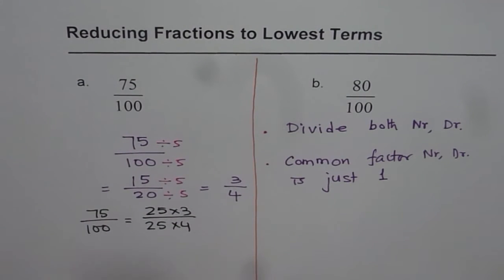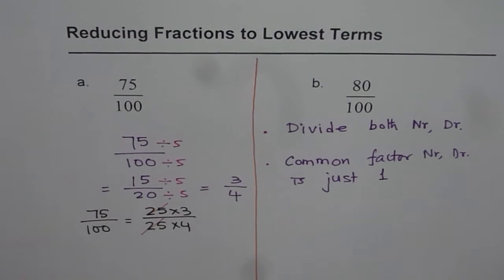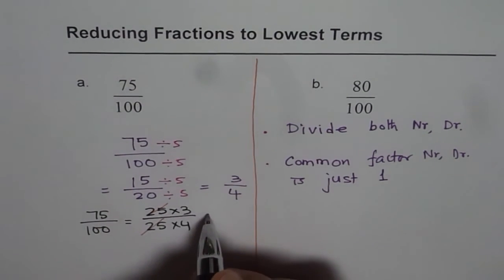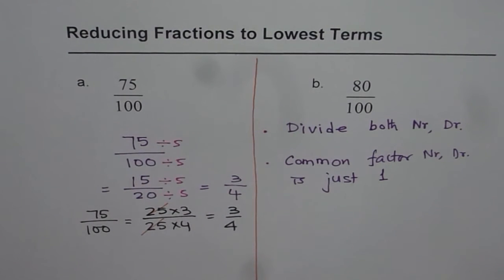Now, we know we can divide quarters, 25, 25. What do we get? We get 3 over 4. So, 3 over 4 we get. Same answer.